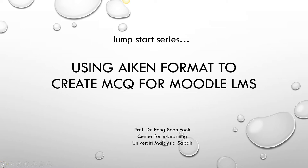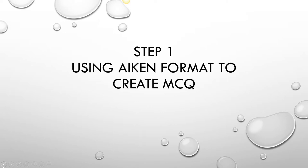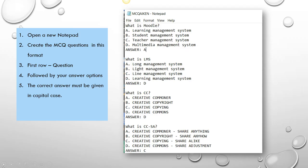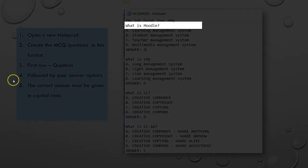Using the Aiken format to create multiple choice questions (MCQ) for Moodle Learning Management System. Step 1: To create the MCQ using the Aiken format, you open up a notepad, create a new file, and you create the MCQ question in this format, where the first row is the question.